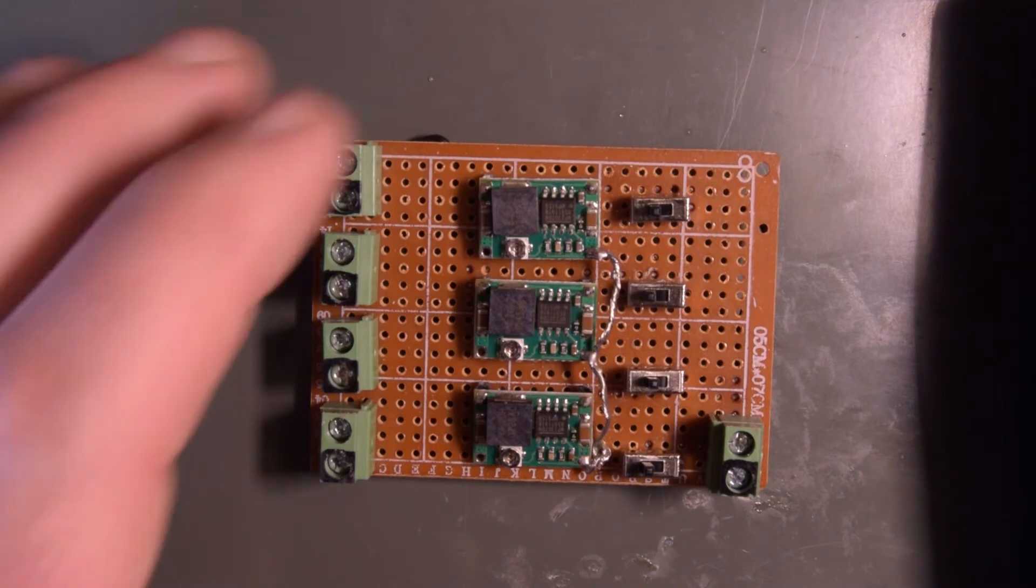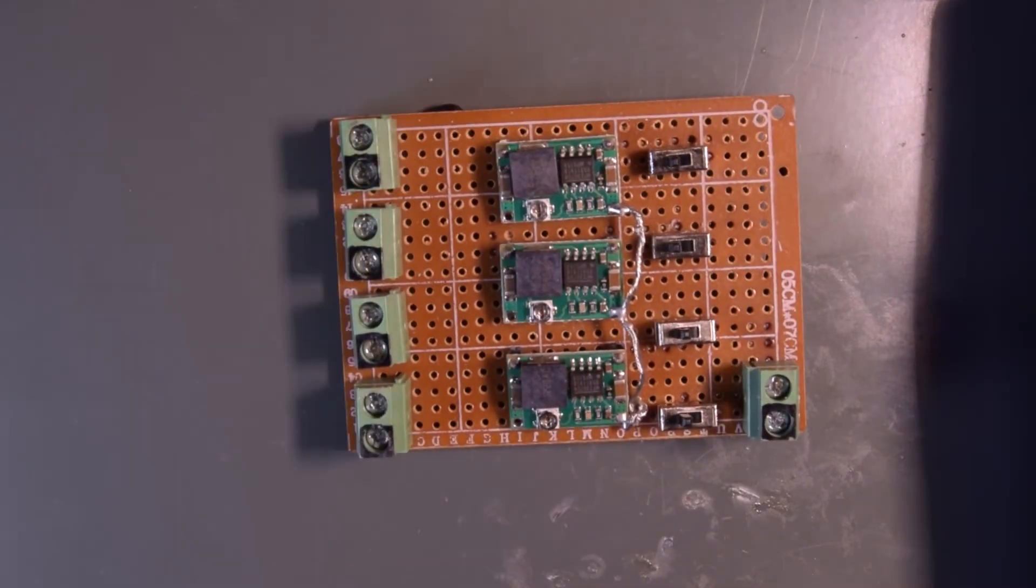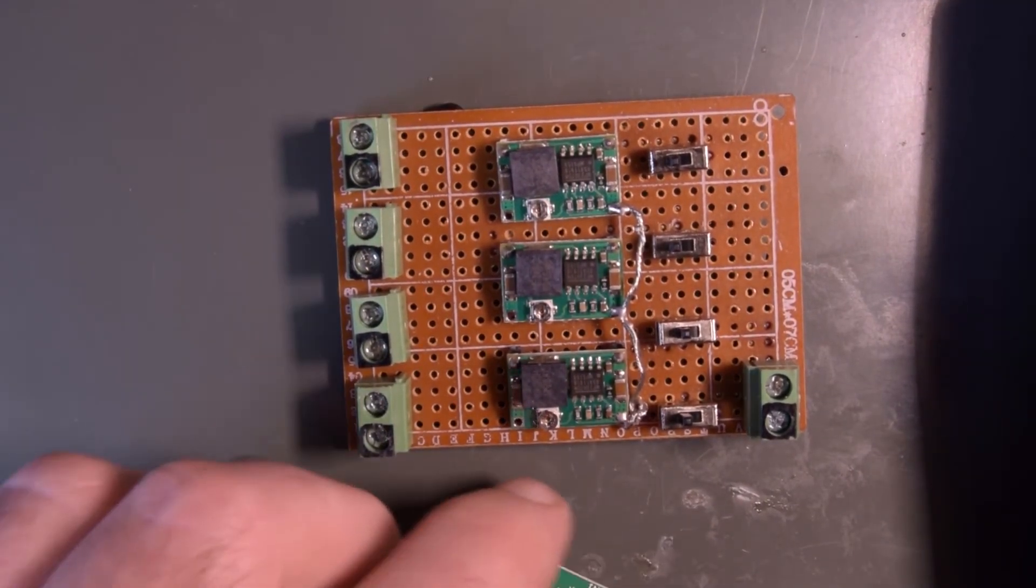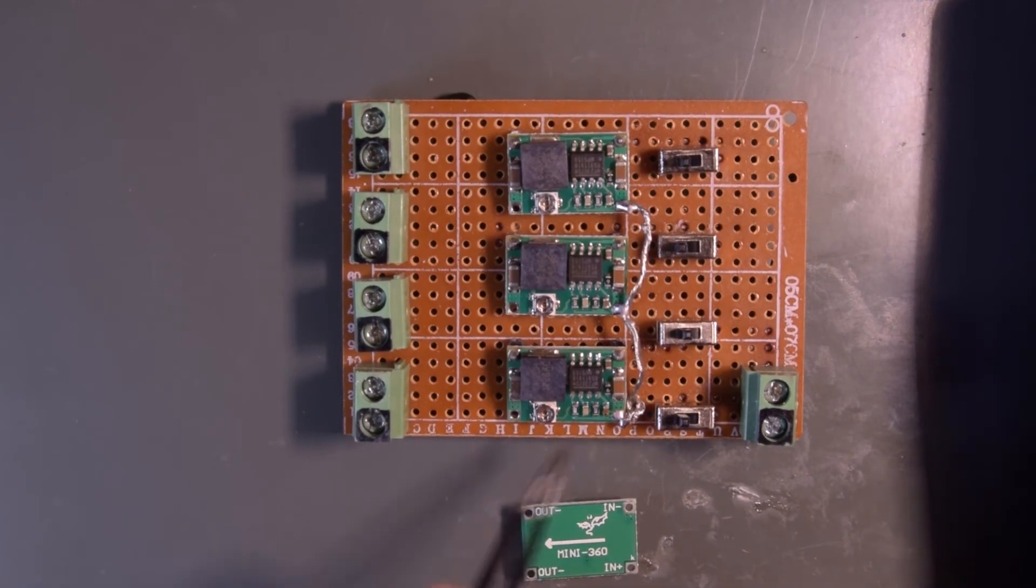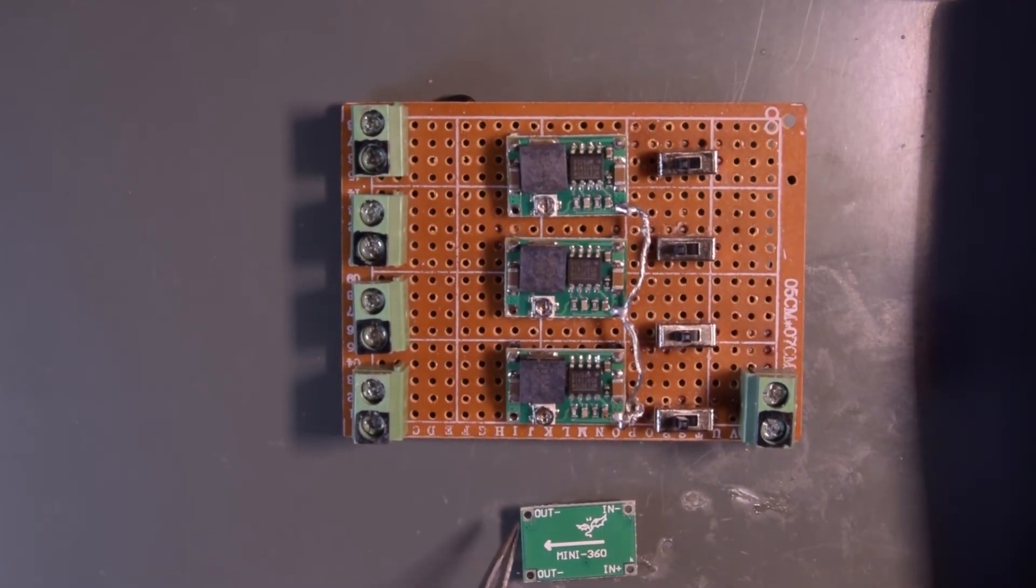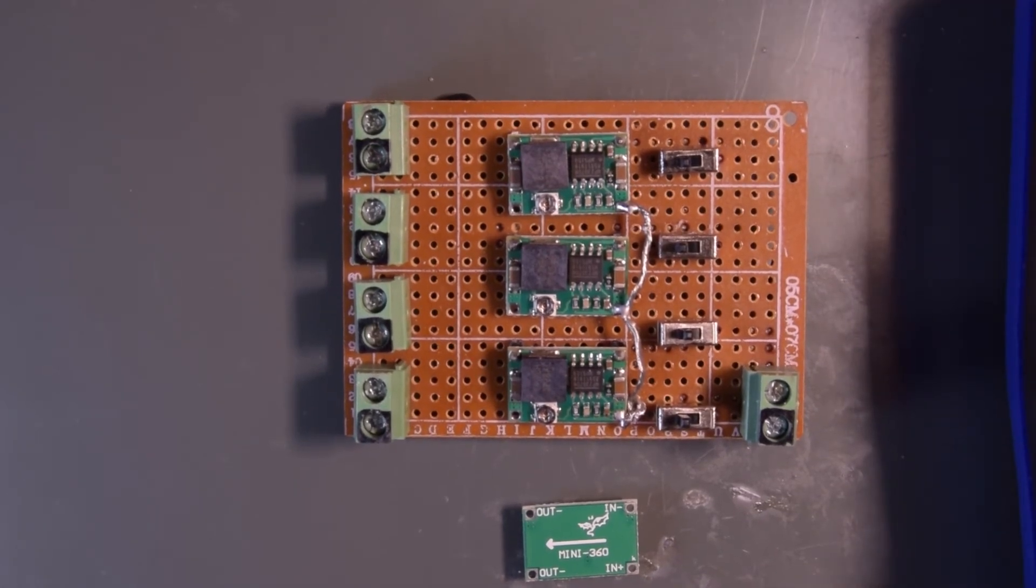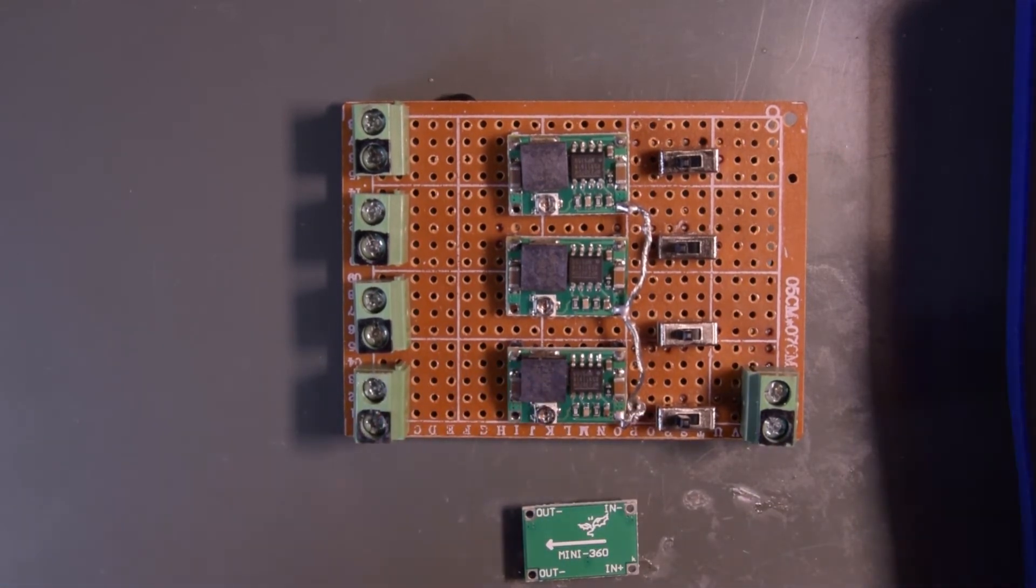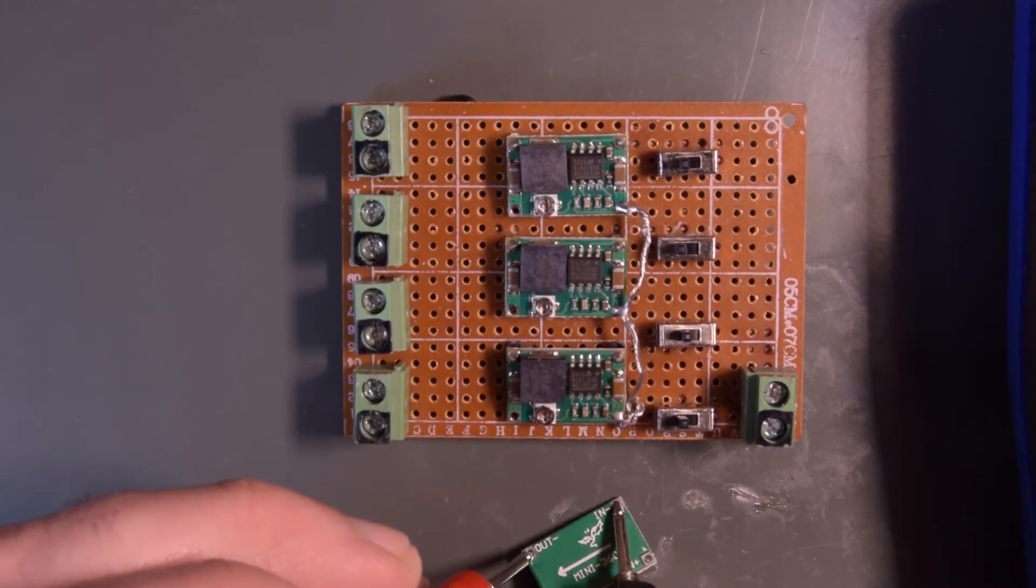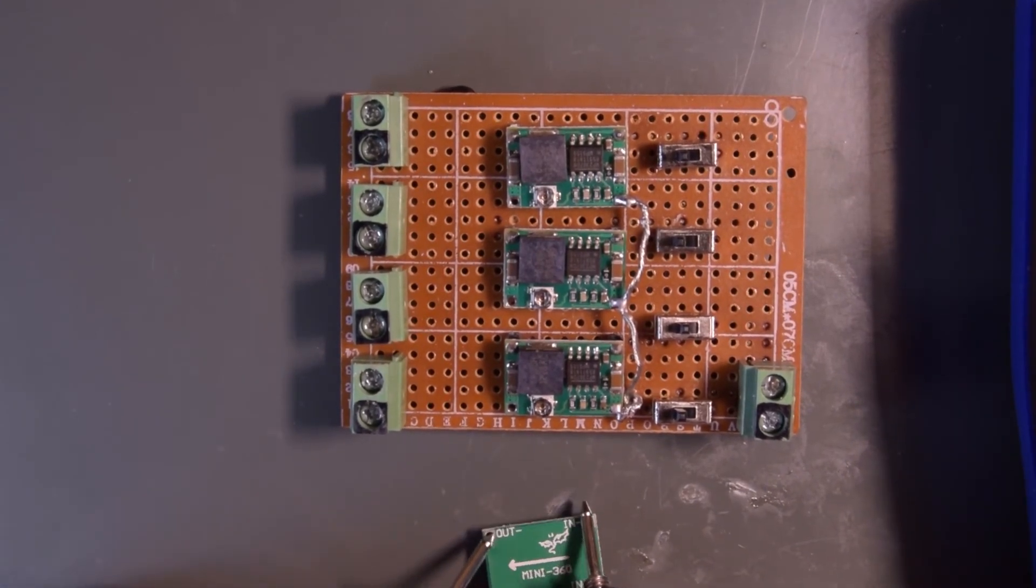So we pretty much have all the positive side connected and we've got these grounds all hooked up to each other. There's one thing I just noticed though: this is the module here. If you look at the in minus and the out minus—the negative on both sides—if you look at them, this whole ground plane is just a shared ground. And you can prove that. I'll put my multimeter on the resistance buzzer, so when you touch these two things together they beep. Touch these—yeah, so I can't hold it in permanently obviously, but they're linked.